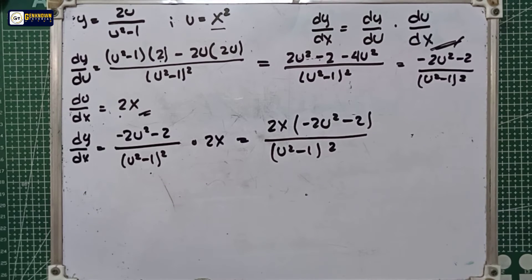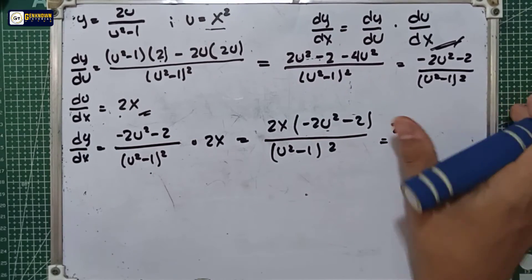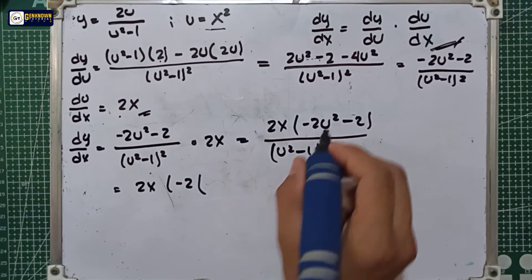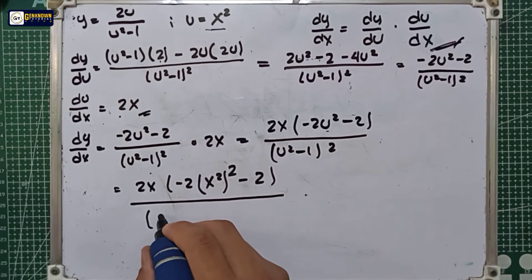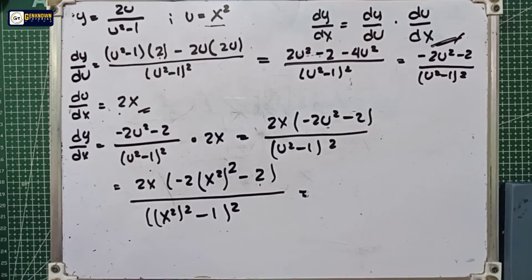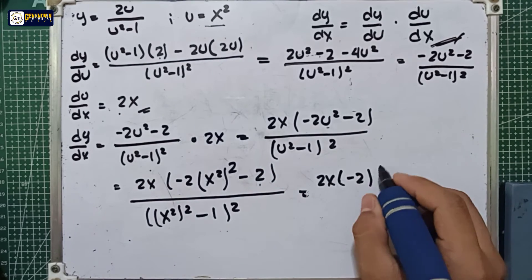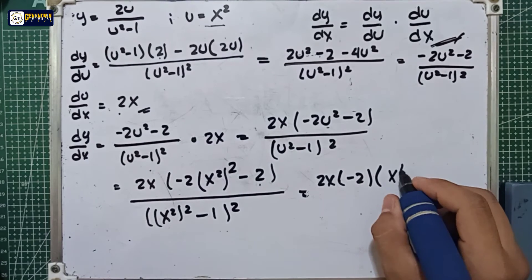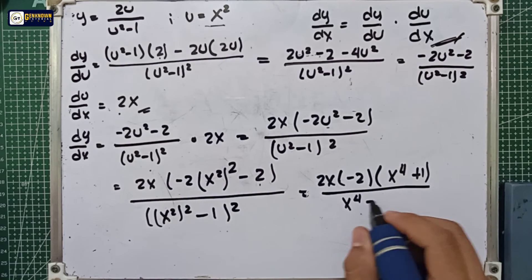The next step is to substitute the value of u, since u equals x squared. That gives us 2x multiplied by negative 2 times x squared raised to 2 minus 2, all over x squared raised to 2 minus 1 raised to 2. We can factor out negative 2, and x squared raised to the second power equals x to the fourth power. So we have 2x times negative 2 times x to the fourth power plus 1, all over x to the fourth power minus 1 raised to 2.